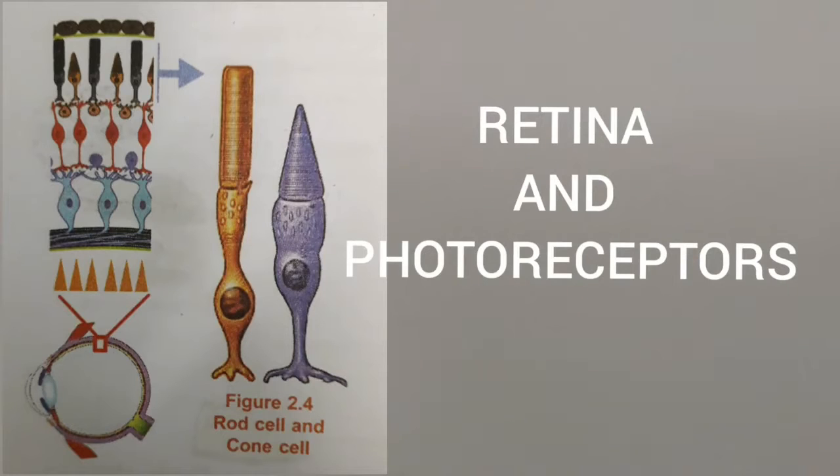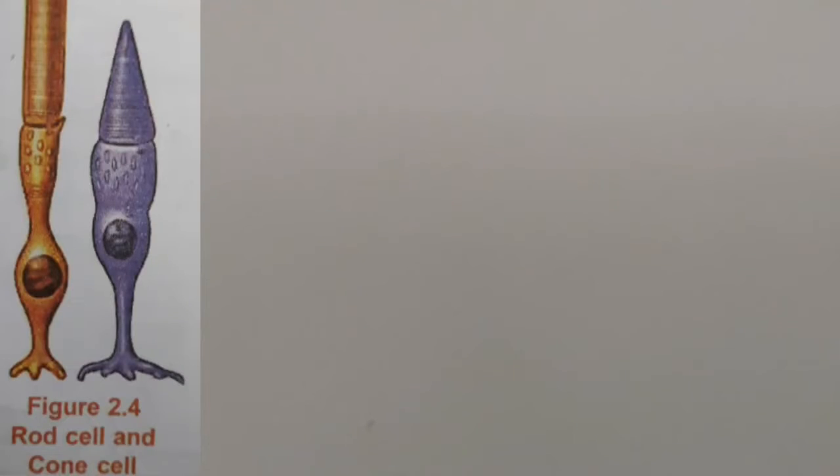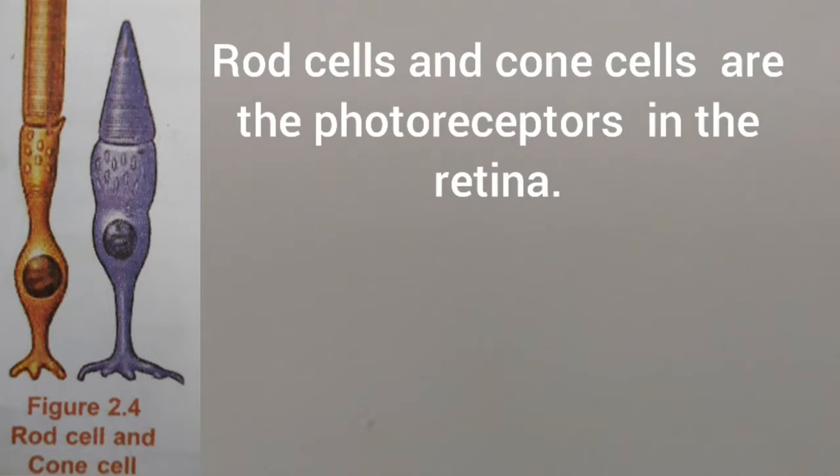You might have understood that photoreceptors are present in the retina. Rod cells and cone cells are the photoreceptors in the retina.